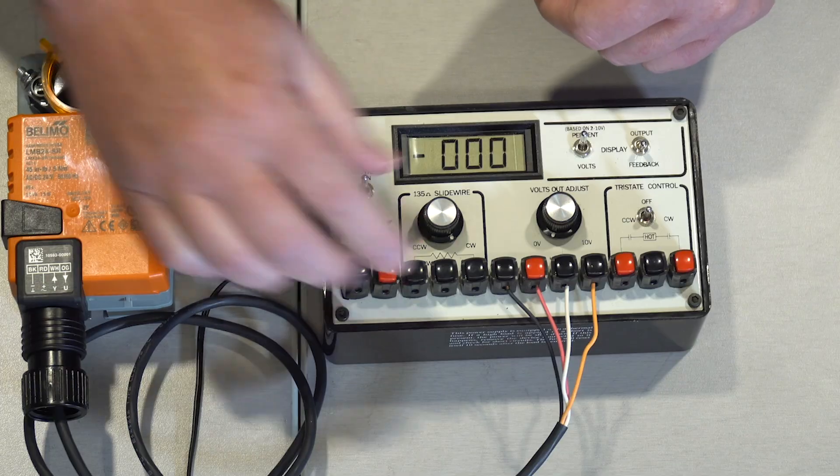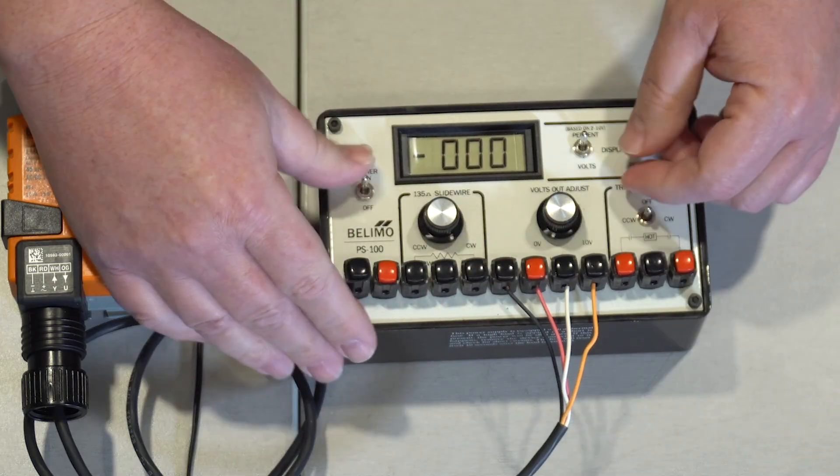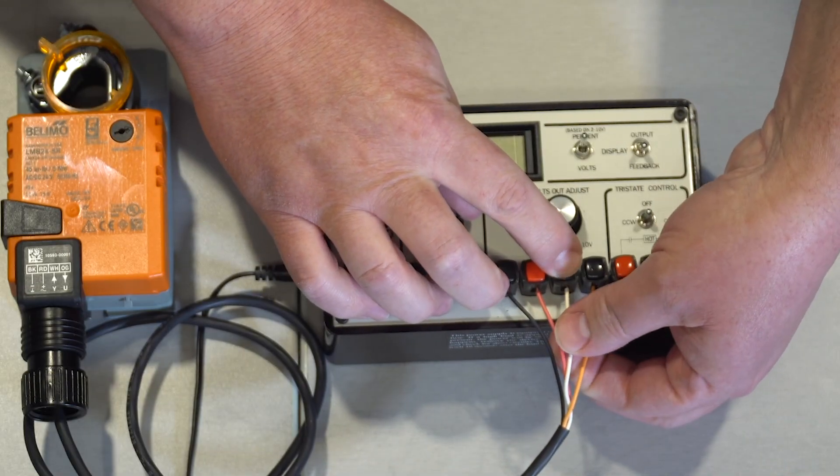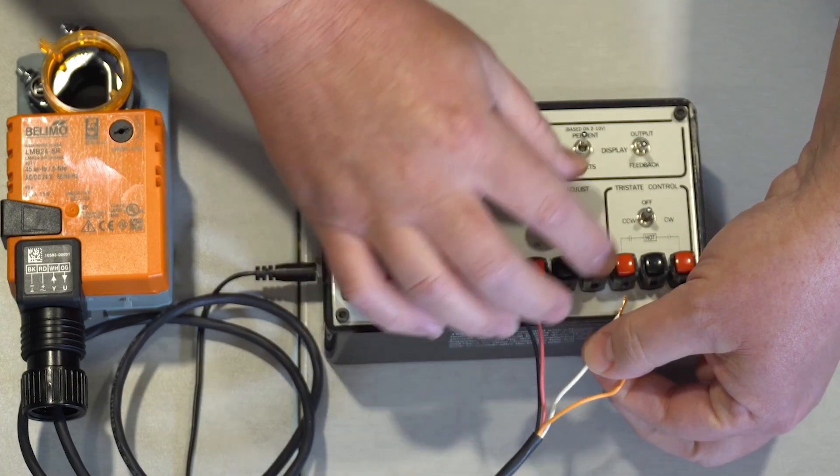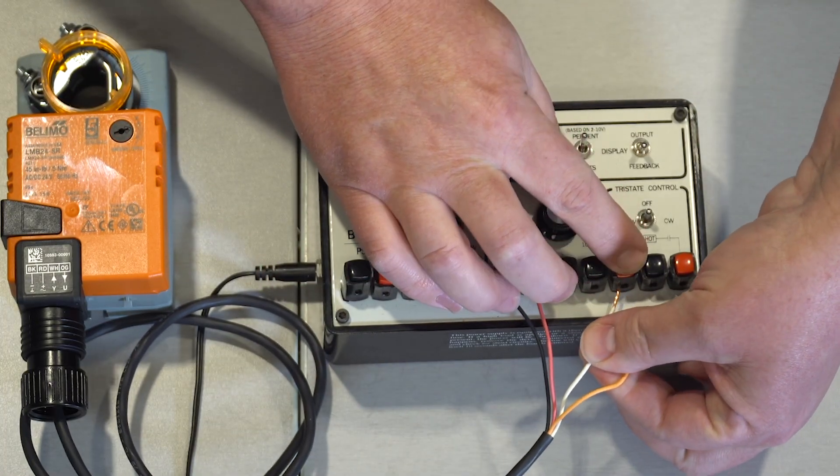To wire for on-off, we're going to disconnect our control output and our feedback wire, and our control output white wire will now be connected to 24 volts hot.